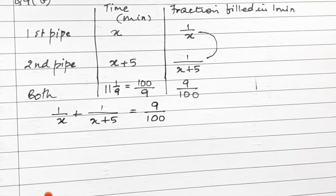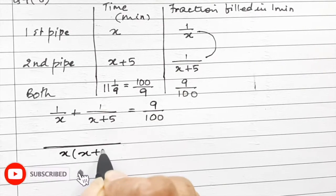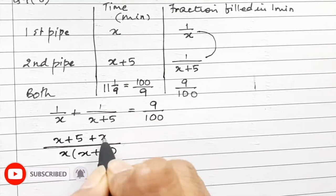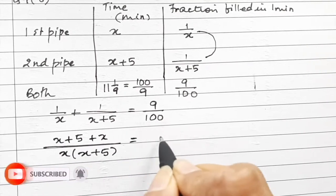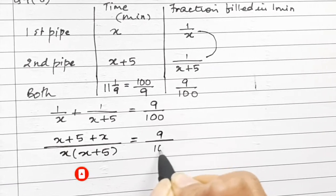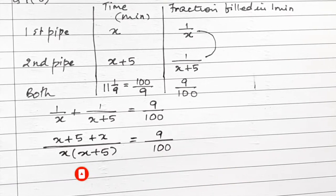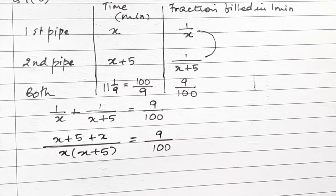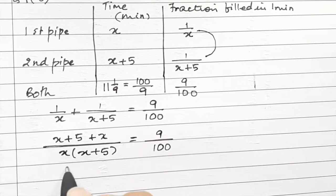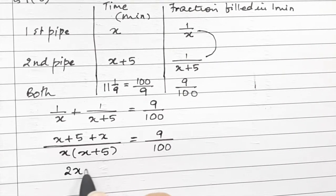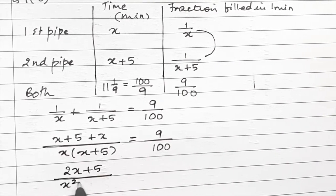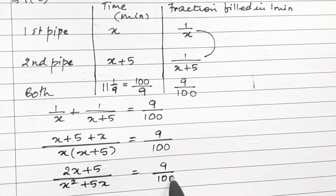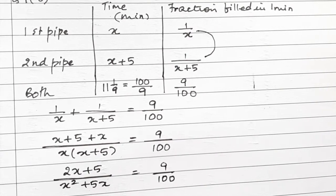Taking the LCM of x and x plus 5, which gives x(x+5) in the denominator, the numerator becomes (x+5) + x, giving us 2x plus 5 over x(x+5) equals 9 upon 100. You can pause the video here and try it yourself. Cross multiplying gives us 100(2x + 5) = 9x(x+5).